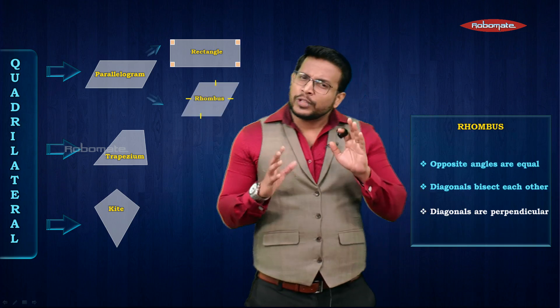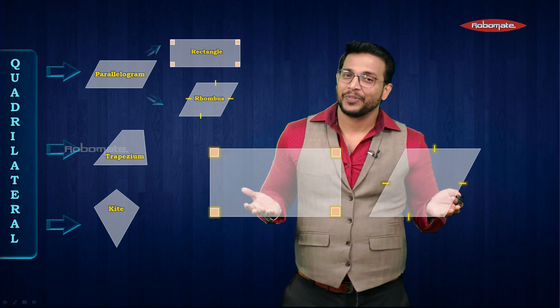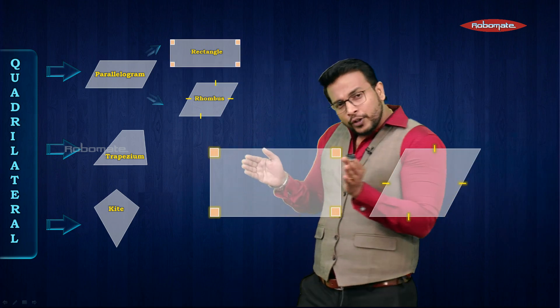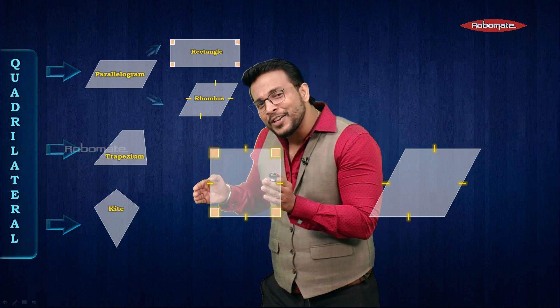Now we're going to do something very interesting. Let's consider a rectangle and a rhombus. Focus on the rectangle first — I'm going to modify it so that each of its sides is equal. Observe carefully: yes, each side is equal. This becomes a square, where each angle is 90 degrees and each side is equal.